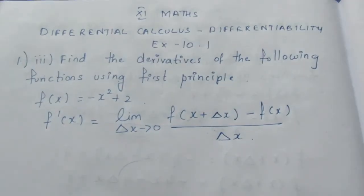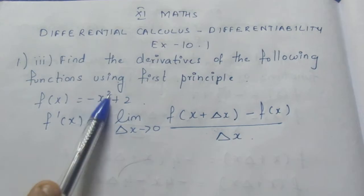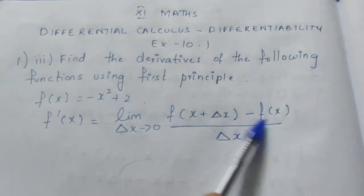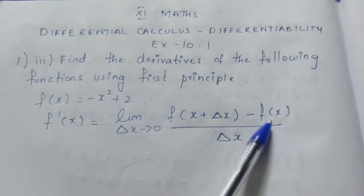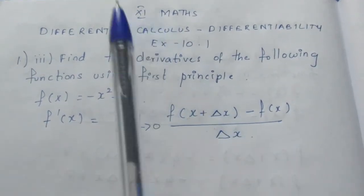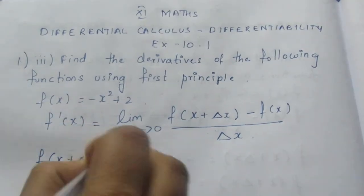So this is how you apply it. The question: F of x is equal to minus x square plus 2. So f of x we can substitute directly. F of x is equal to, and now f of x plus delta x. That is x plus delta x.